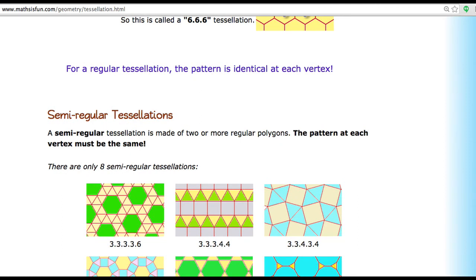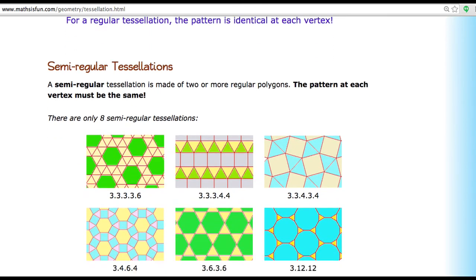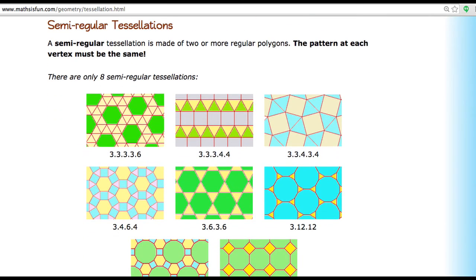For a regular tessellation, the pattern is identical at each vertex. And you can see here for non-regular tessellations, semi-regular, it's made of two or more regular polygons. This just gives you an idea that they're not all the same sides, but you can mix and match to have different tiling.